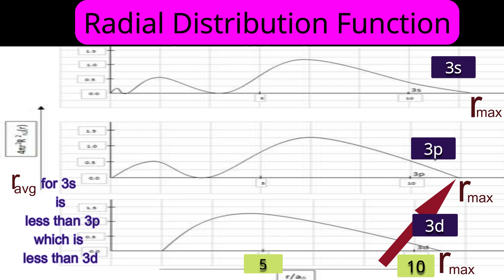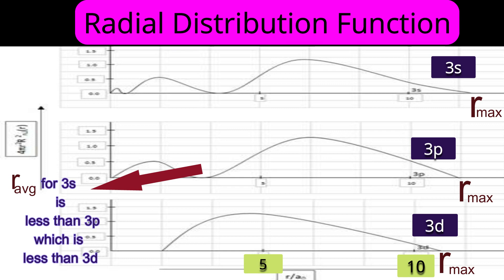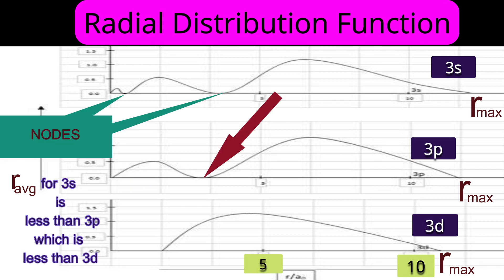Although r_max for 3s is larger than for 3p, we should not conclude energy based on r_max. Energy is determined by average r. The 3s orbital has spent more time near the nucleus — near the 1s and 2s regions — because of its two nodes. Therefore, average r for 3s is lower than for 3p, so energy of 3s is lower than 3p. Nodes play a critical role in determining the energies of orbitals.